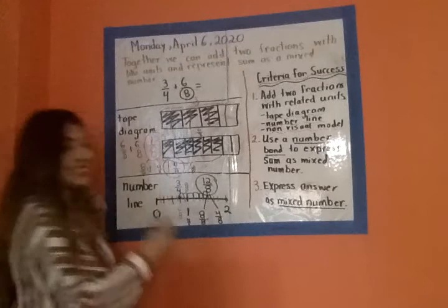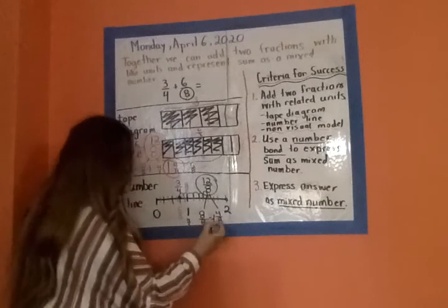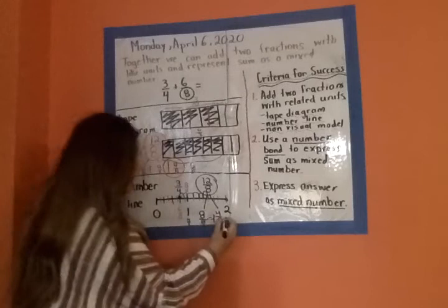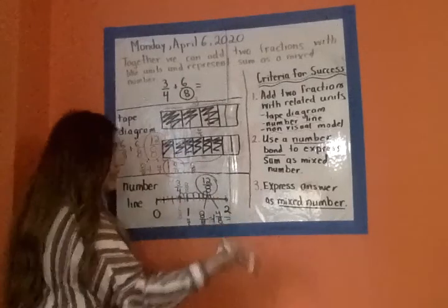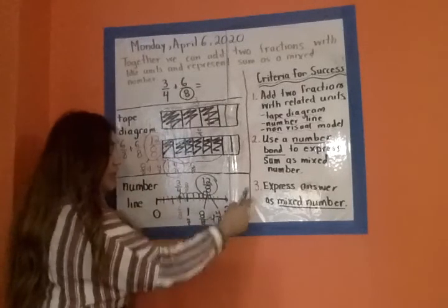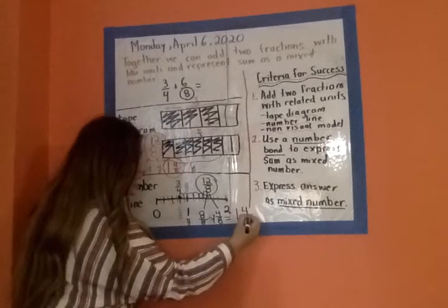We know eight eighths is equivalent to, friends, one. We know four eighths is less than one. So our answer, or our sum I should say, as a mixed number would be one and four eighths.